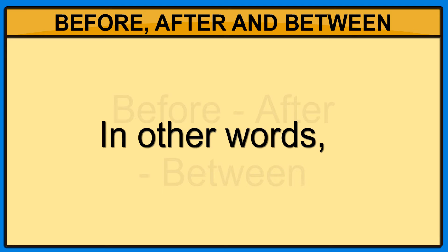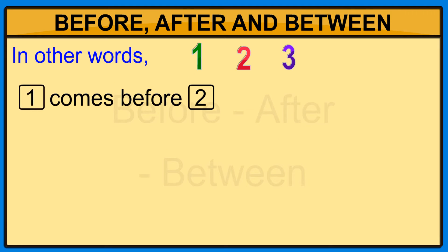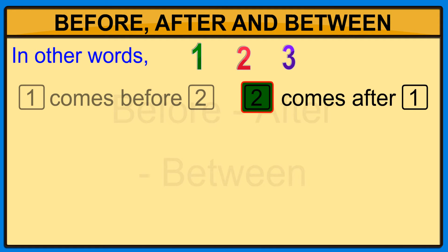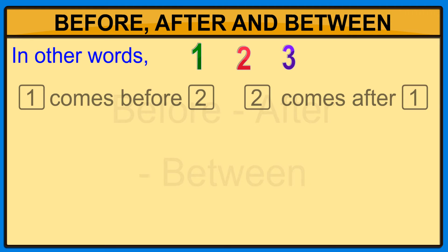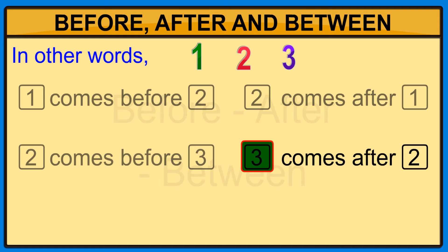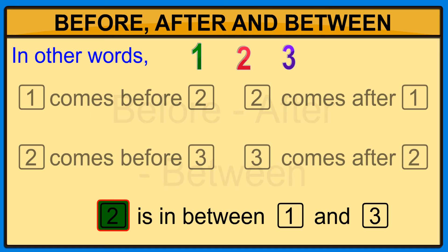In other words: one comes before two. Two comes after one. Two comes before three. Three comes after two. Two is in between one and three.